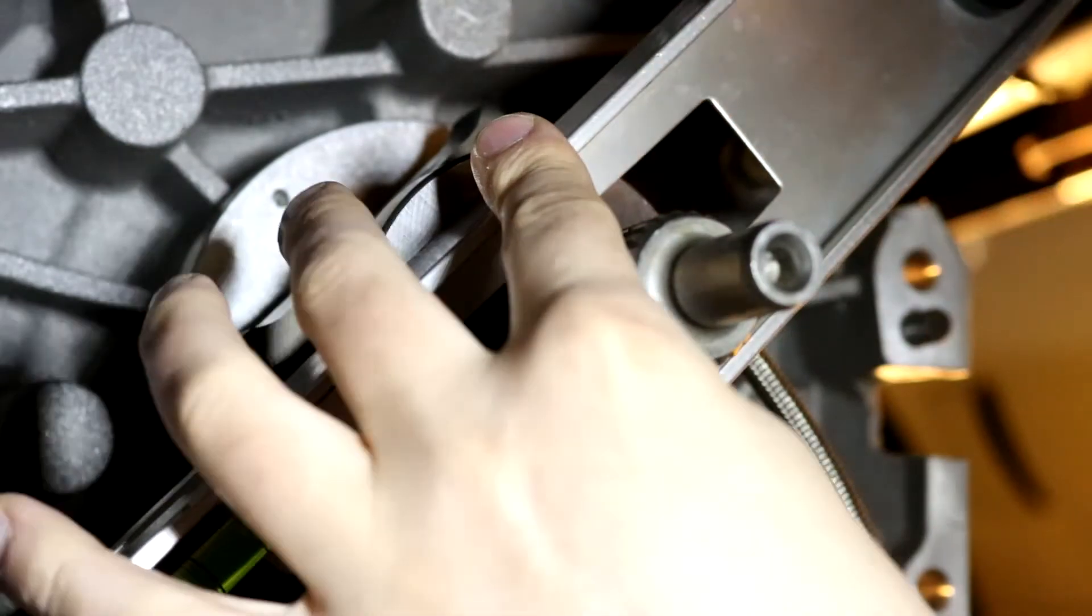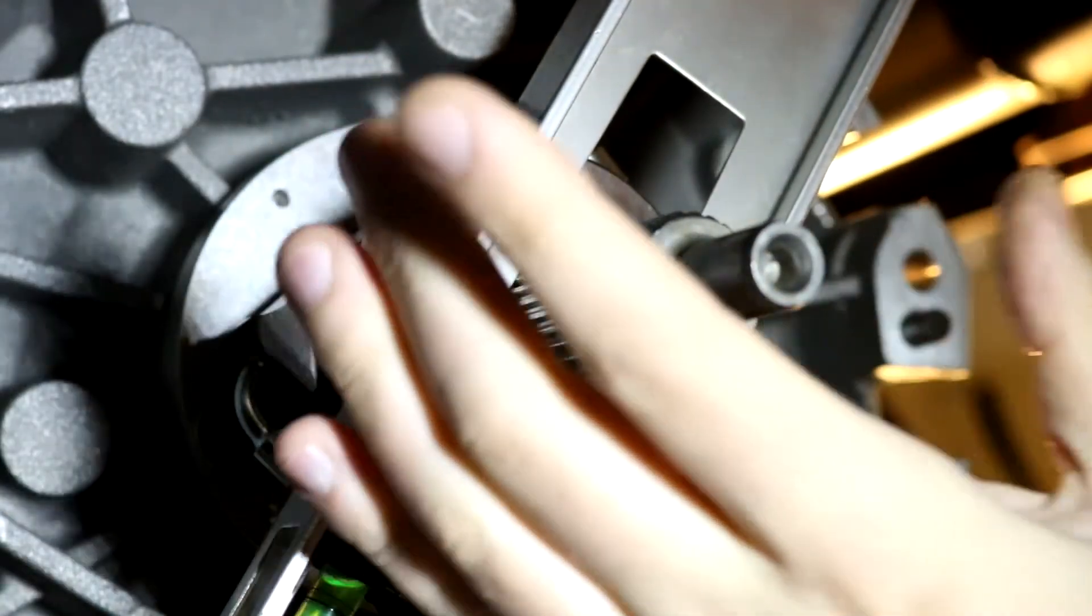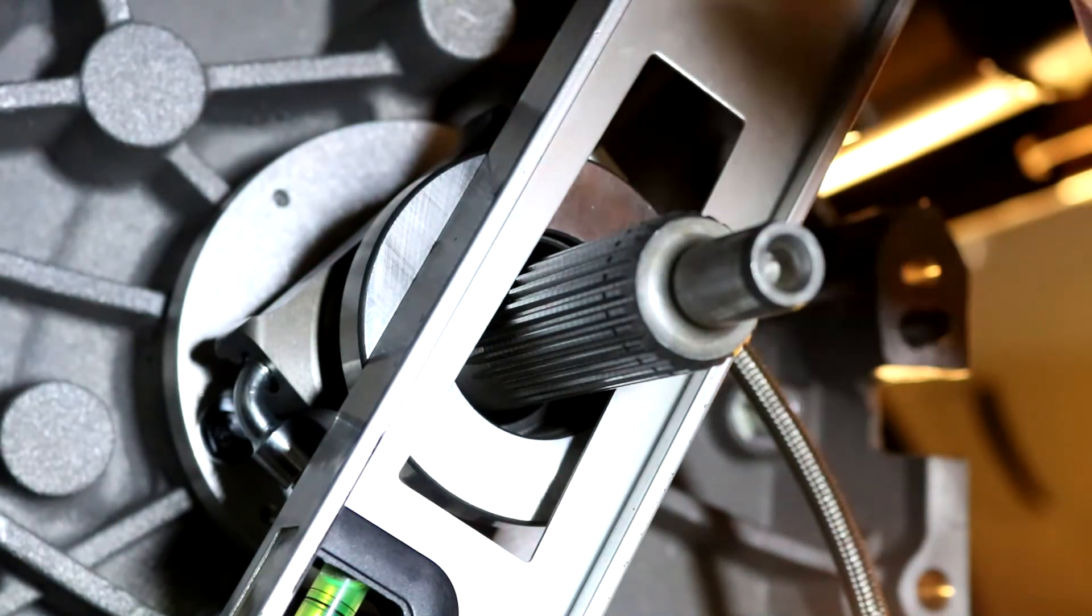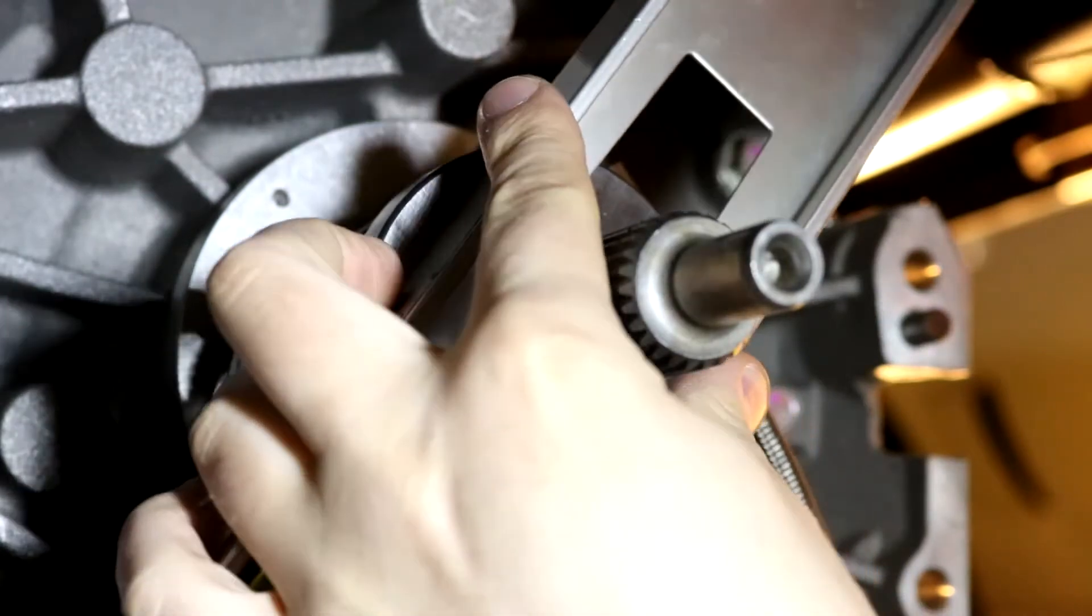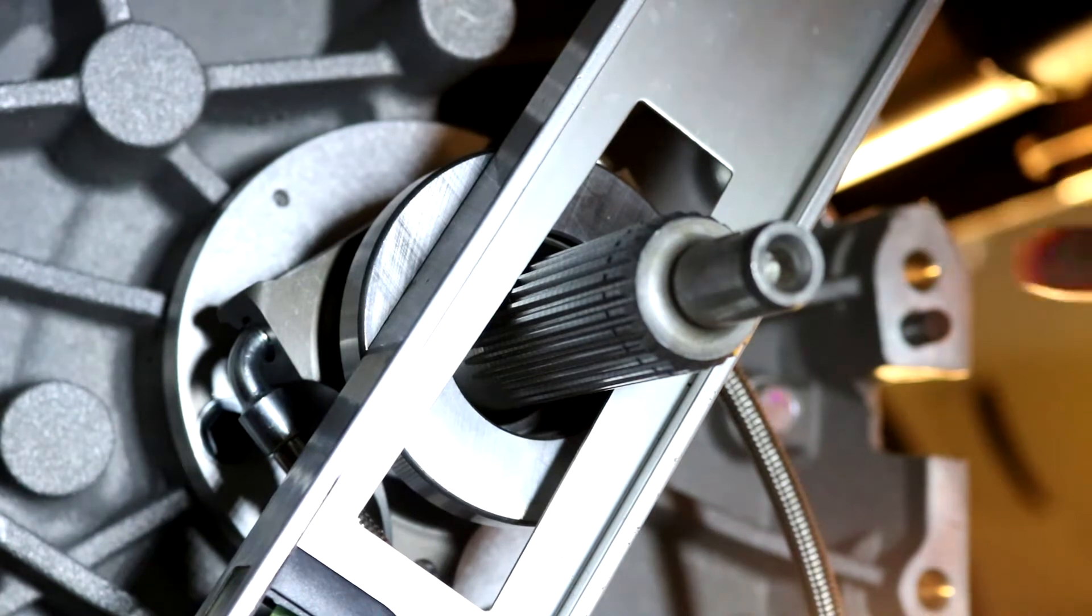Like so. Because what we measured, 3.432 off the bell housing, we want an eighth of an inch gap, that's 0.125. So we're looking at 3.307 from the face of the bearing to the face of the transmission. So we've got a ways to go.